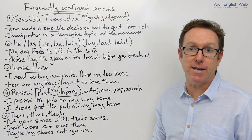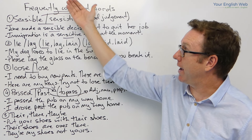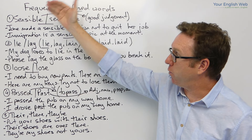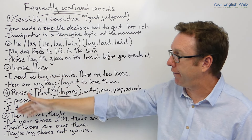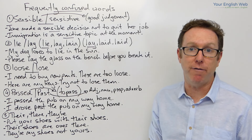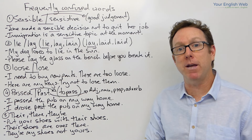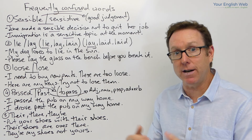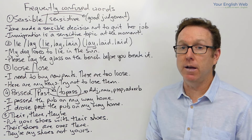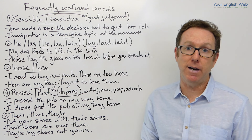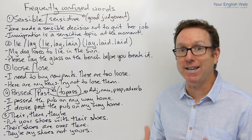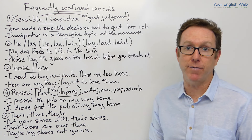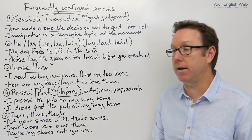Now, as I said, today's lesson is looking at frequently or commonly confused words in English and we have one, two, three, four, five examples of words that can be confused or are easily confused by learners of English and also by native English speakers. And when I say native English speakers, I mean people that have spoken English all their lives or have been educated in that language.